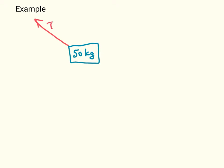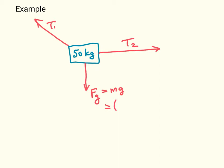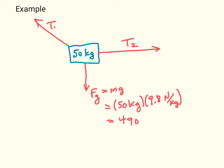There's a cable which we'll call tension T1, and there's another cable attached to some structure, which we'll call tension T2. To complete our free body diagram, we need the weight acting straight down — that's Fg. We can find the weight using the mass and the gravitational field strength of the Earth: 50 kilograms times 9.8 Newtons per kilogram, which gives us a weight of 490 Newtons.